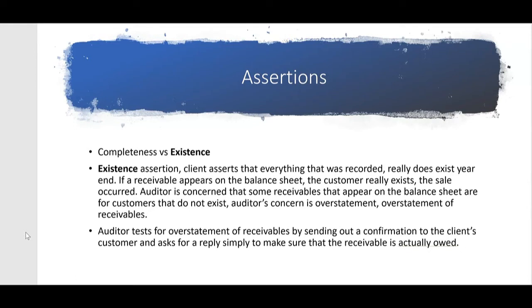With the existence assertion, the client is asserting that everything that was recorded on this year's balance sheet really does exist at year-end. For example, if a receivable appears on a balance sheet, the client is asserting that the customer really exists and that the sale really did occur. Sometimes you see the term 'occurrence' alongside 'existence' because they go together — if the receivable exists at year-end, that means the sale must have occurred during the year. But if the sale didn't occur, the receivable doesn't exist.